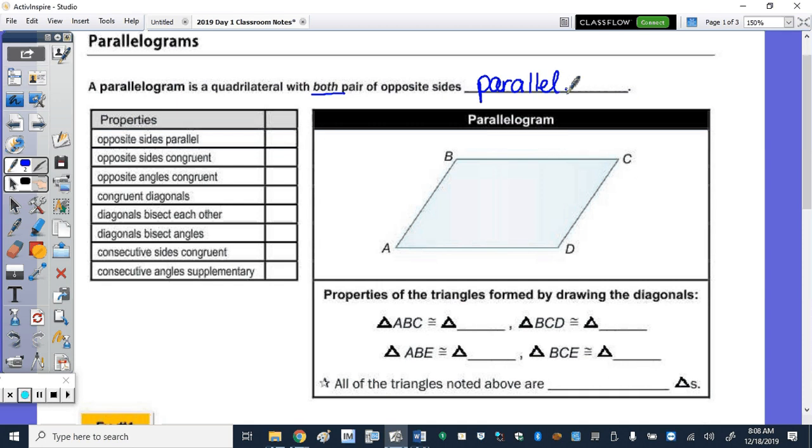The properties, so in the table there, we can check the first row: opposite sides are parallel. Opposite sides are also congruent, we can check that box. Opposite angles are congruent, the diagonals bisect each other. And then lastly, the consecutive angles are supplementary. That's true for all parallelograms, so those that we didn't check, those properties are true only for some parallelograms.